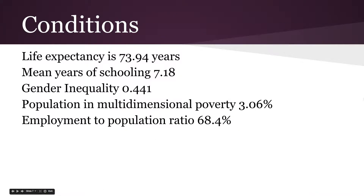Brazil is in its fourth stage of demographic transition, as shown in the other graphs. It's been developed and the death rates and birth rates are both lowered, so the population is steady and high. These are some of the current conditions in Brazil, with a life expectancy of 73 years and an average of 7 years of schooling.